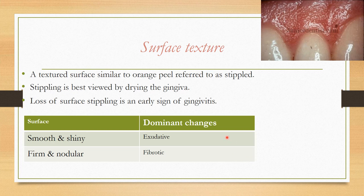Surface texture: the attached gingiva has a textured surface similar to orange peel, referred to as stippling. Loss of surface stippling is an early sign of gingivitis. However, stippling may be absent in healthy individuals, which is not a disease condition — so write 'absence of stippling' rather than 'loss of stippling,' which implies disease. In inflammation, the surface is smooth and shiny; under fibrotic changes it is firm and nodular.